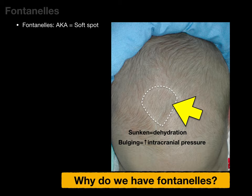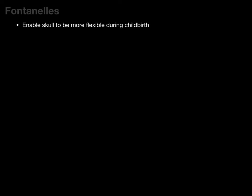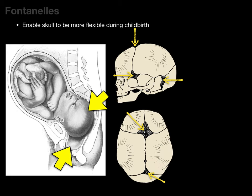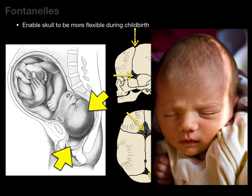So why do we have fontanelles? One reason is to enable the skull to be more flexible during childbirth. Here's an illustration of a baby inside the uterus — look at the size of the fetal head compared to the size of that birth canal. The fontanelles enable molding of the skull as the baby comes out this very narrow birth canal. This is why some newborns have a dome-shaped head that goes away after a couple of days.